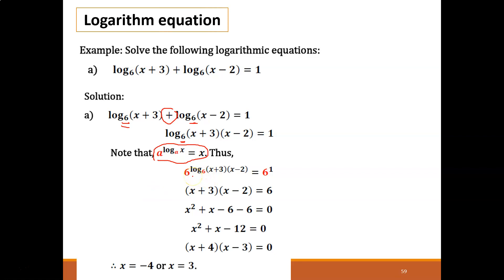A to the power of log base a of x equals x. If we follow the seventh law, 6 to the power of log base 6 of x plus 3 times x minus 2 equals 6 to the power of 1. What happens is this and this are the same, the red one is the same. So you can ignore it. We just want to focus on the power. Since this one is already the same, we just look at the power only. So the power we have is x plus 3 times x minus 2. So x plus 3 times x minus 2 equals 6.